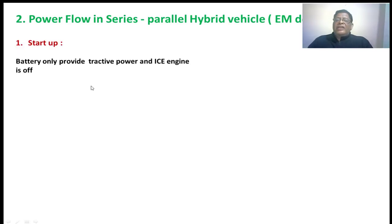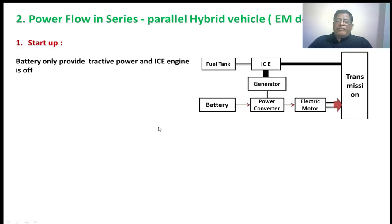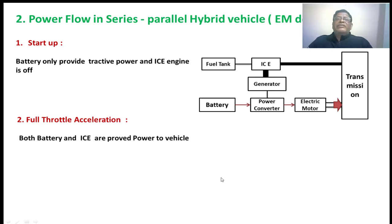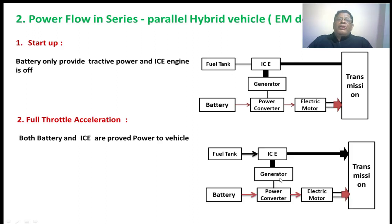Start-up: at the time of starting, the battery will only give tractive power to the vehicle, where the IC engine will be off. Full throttle: if the driver is giving a full throttle to the vehicle, it requires a high amount of power, and that power will be met by both the IC engine as well as the battery. That is shown with two arrows — one is black type arrows and another one is red type arrows.